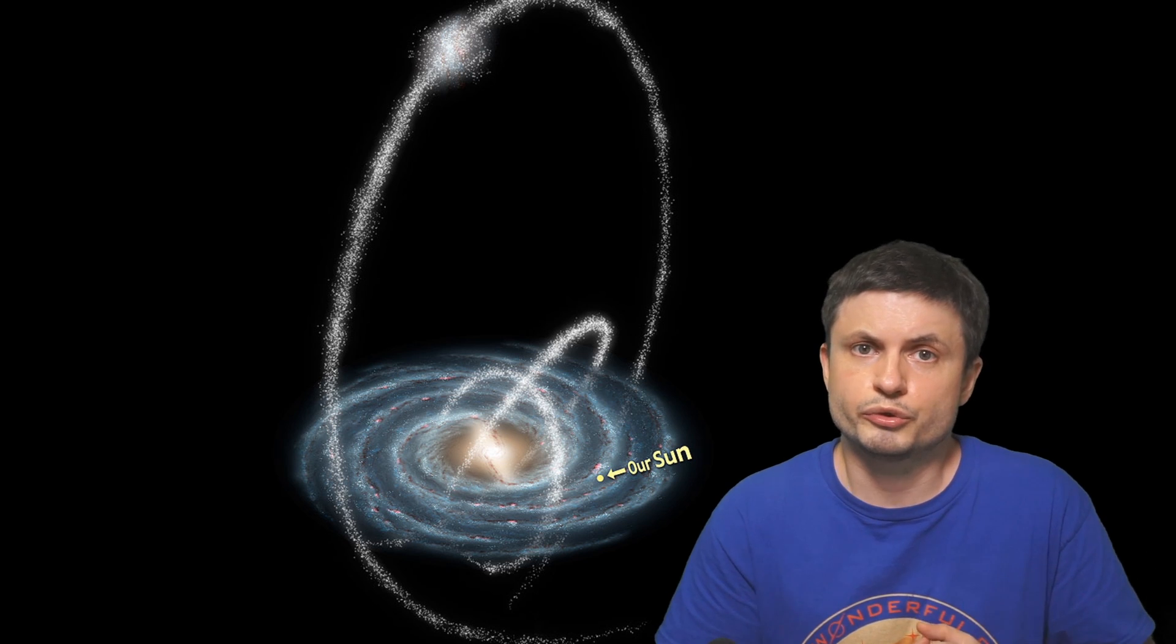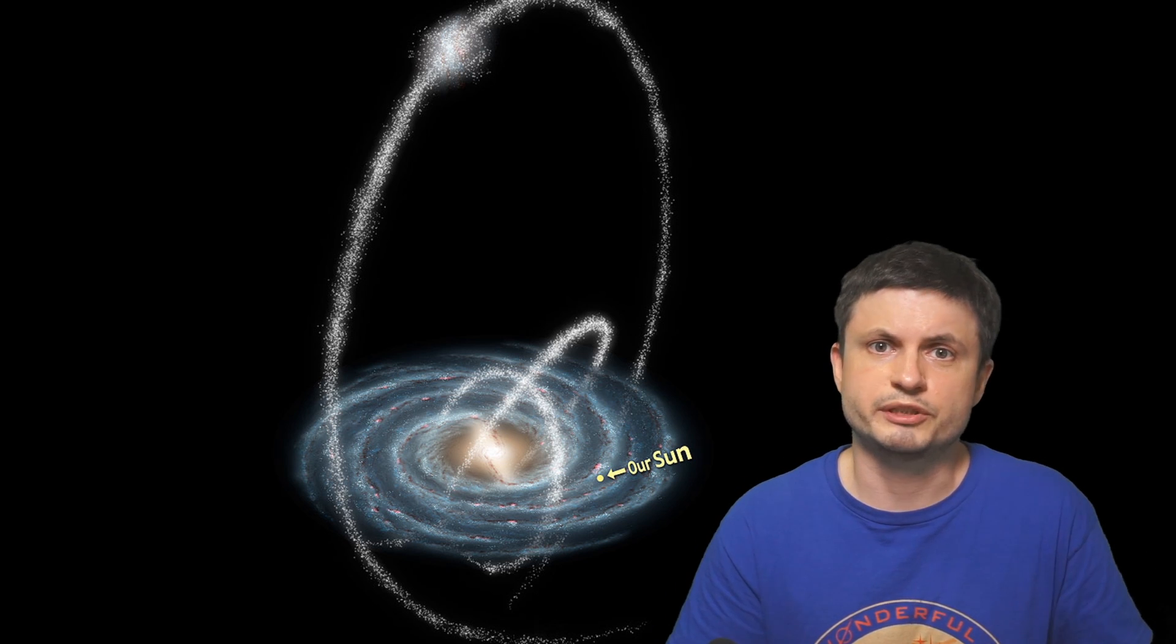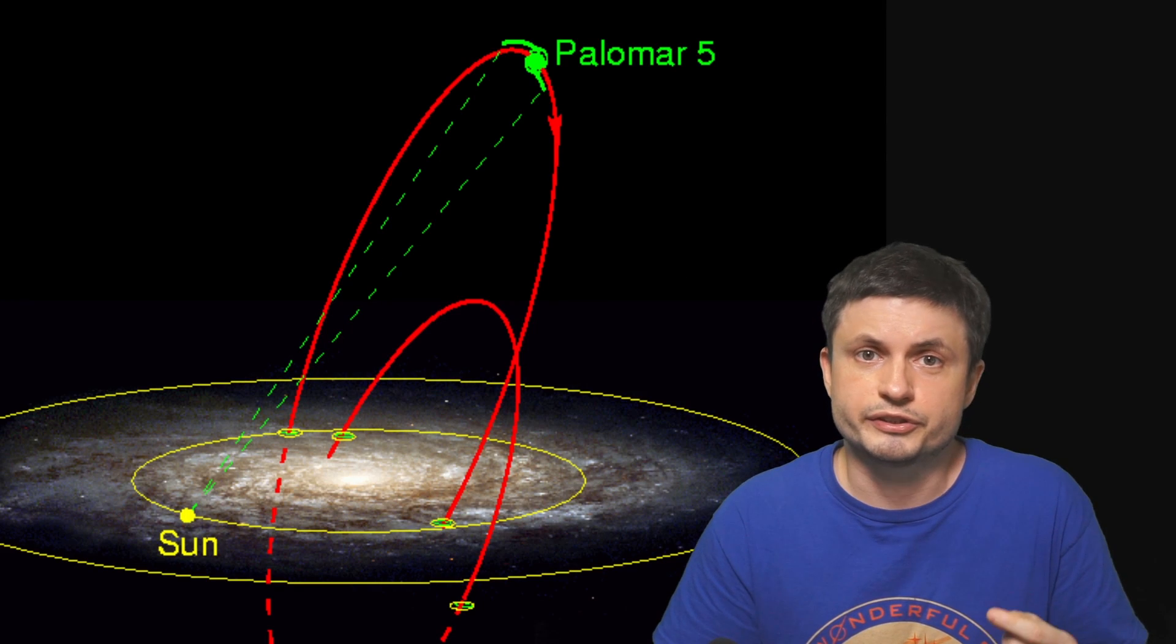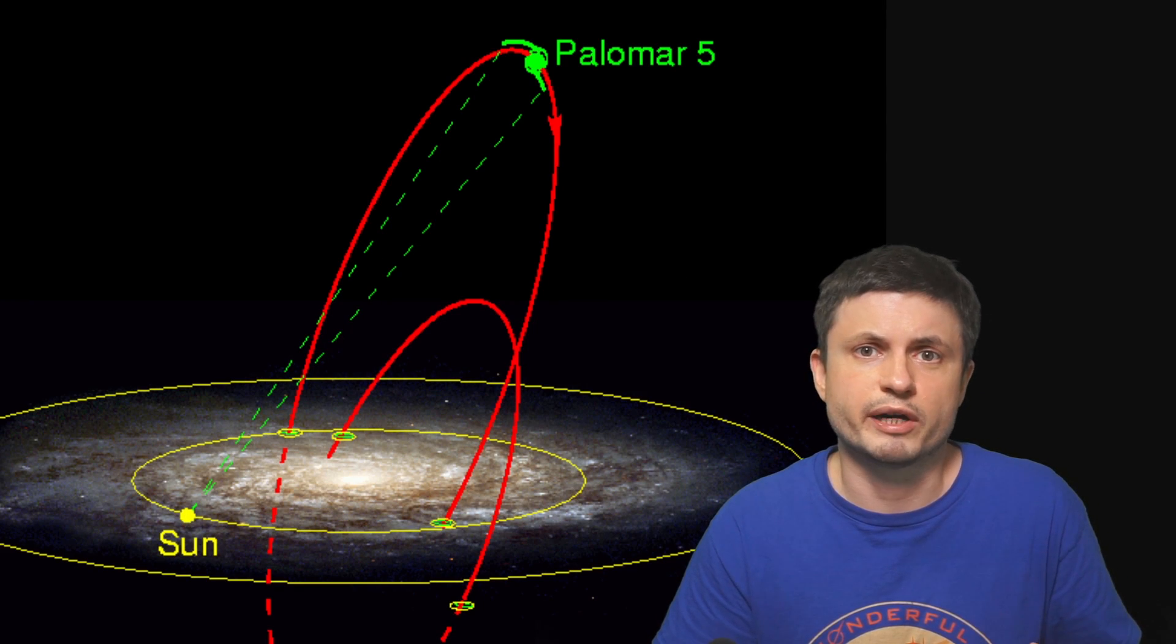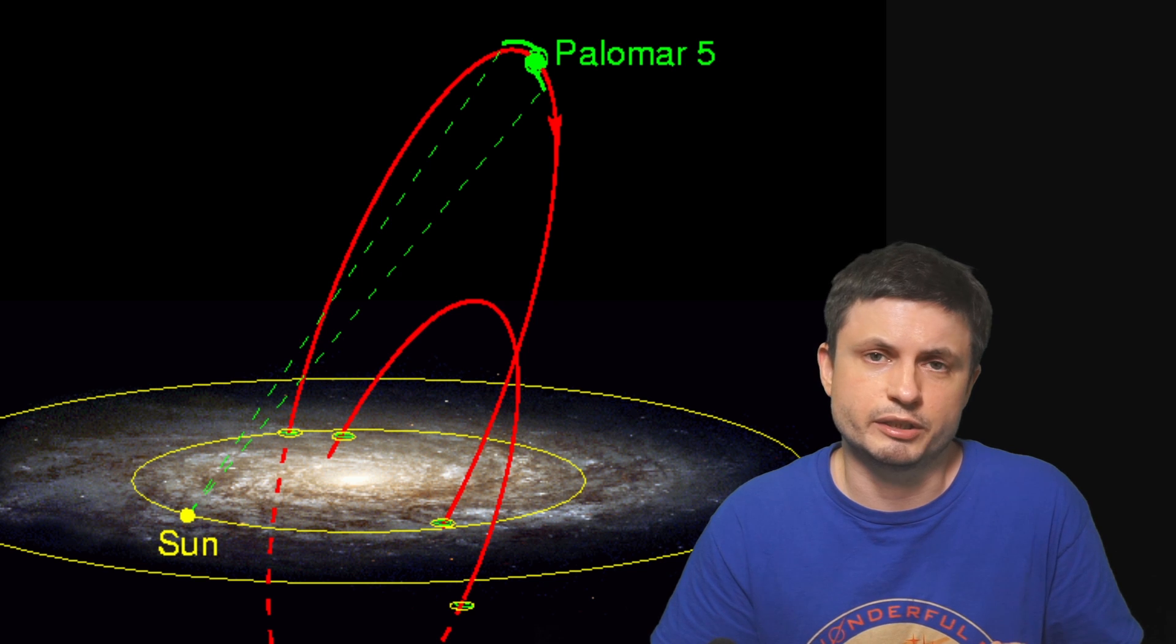But some of these streams are also formed by different galaxies, specifically dwarf galaxies. And this is kind of what the scientists believed Palomar 5 to be at first as well. Over time they realized that it was just too small and not massive enough.